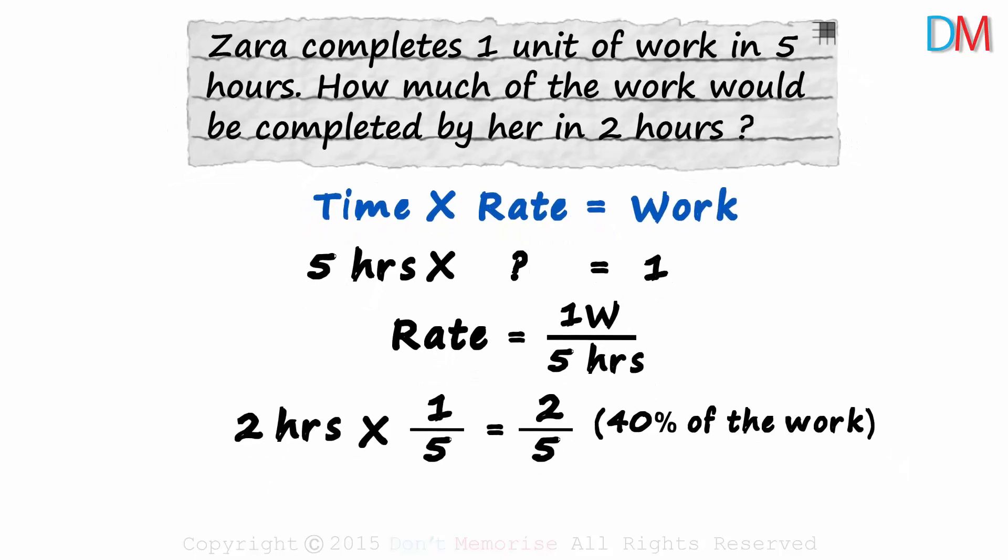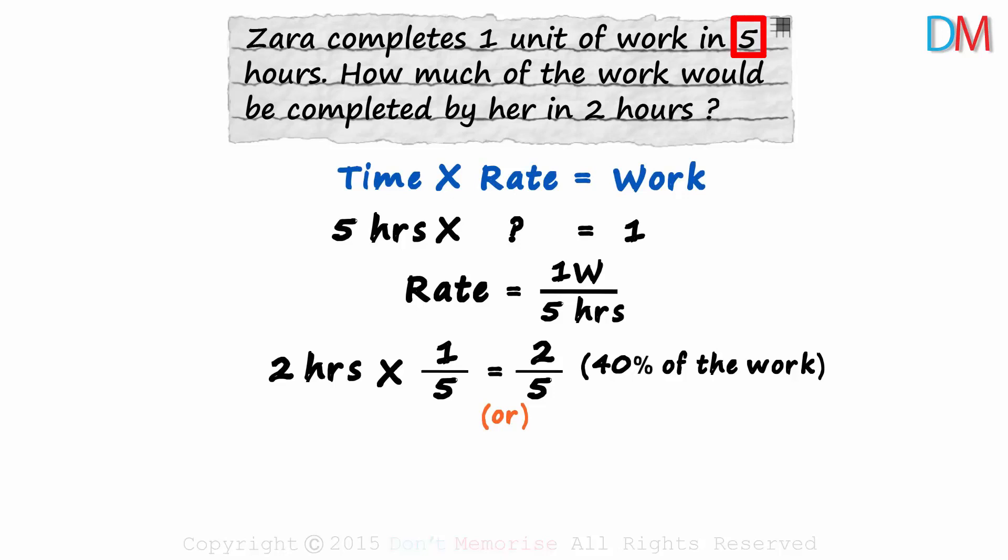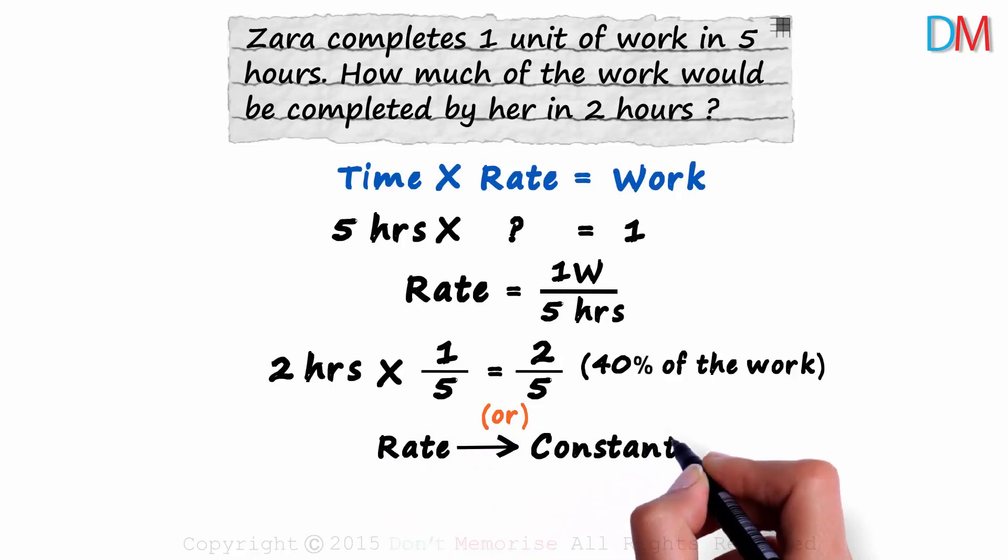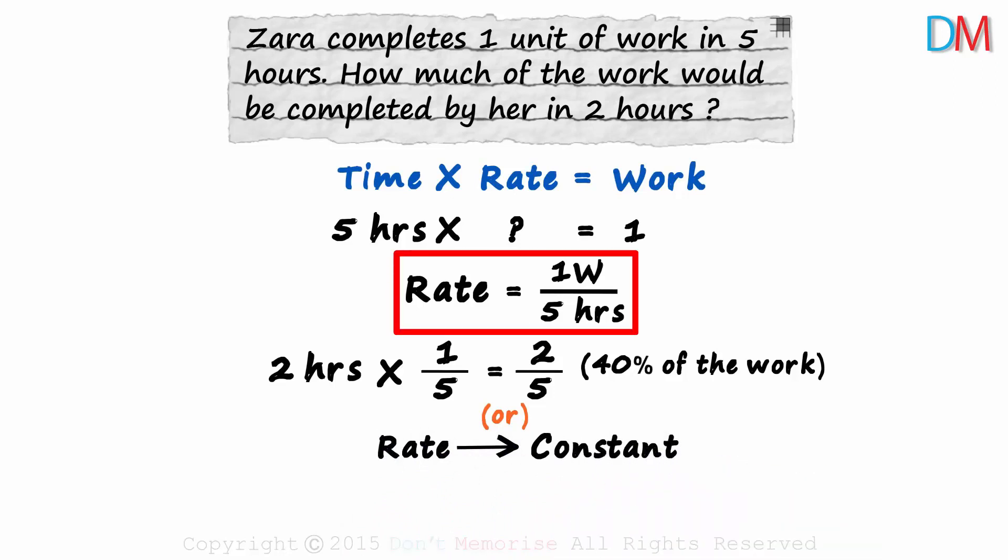There are two cases here. First, when she works for five hours and second when she works for two hours. In both cases, the rate is constant. Her rate of work is one unit of work every five hours. It means that the time and work are directly proportional.